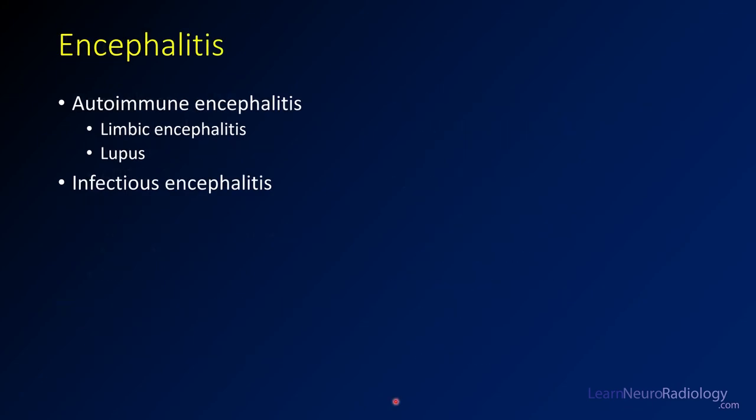The main autoimmune encephalitis that you need to think about are limbic encephalitis and lupus. For infectious encephalitis, there are a number of those, with the most noxious being herpes. We'll cover those briefly as well so you can see what the imaging findings of those are like.